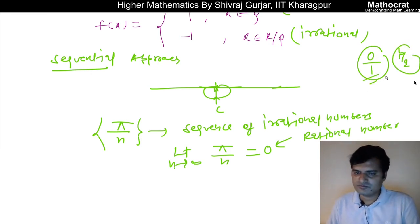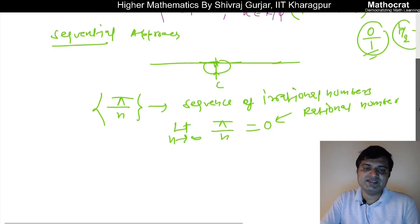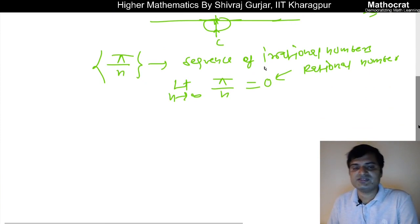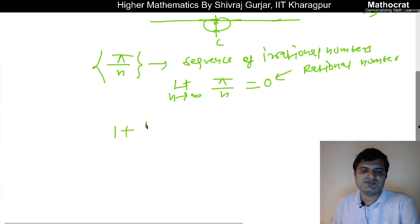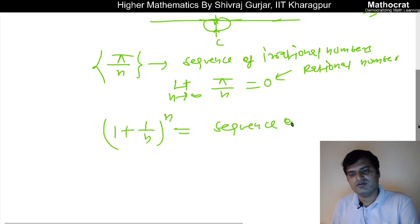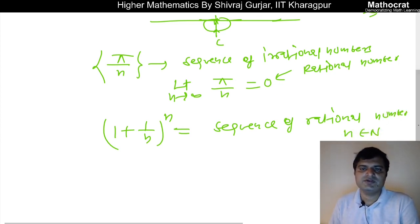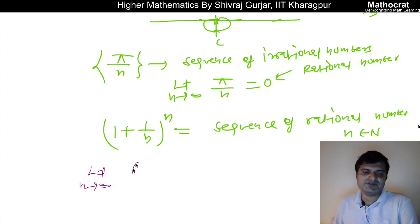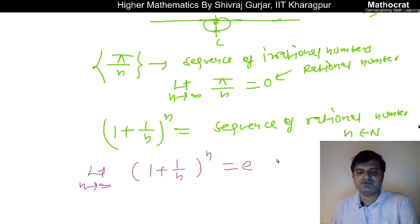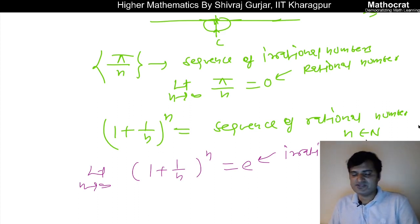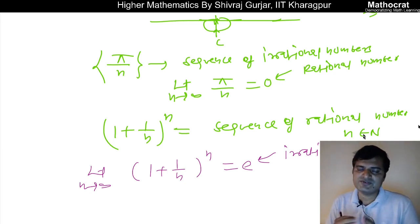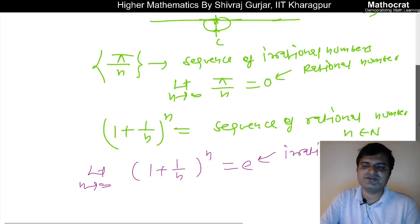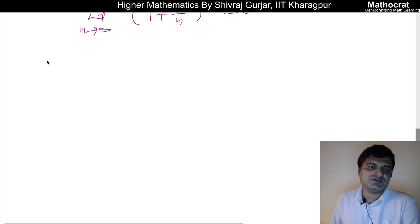Similarly, the sequence (1 + 1/n)^n consists of rational numbers, because n is a natural number. But its limiting value as n tends to infinity is e, which is of course an irrational number. So there exist sequences of rational numbers converging to irrational numbers and vice versa.